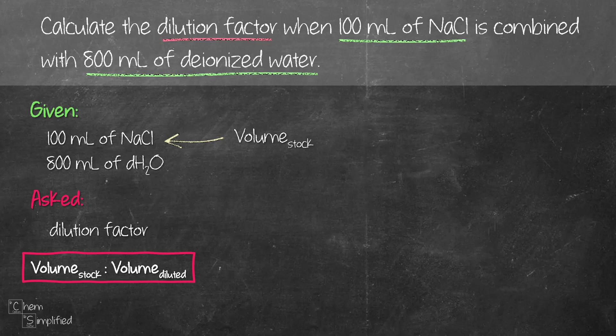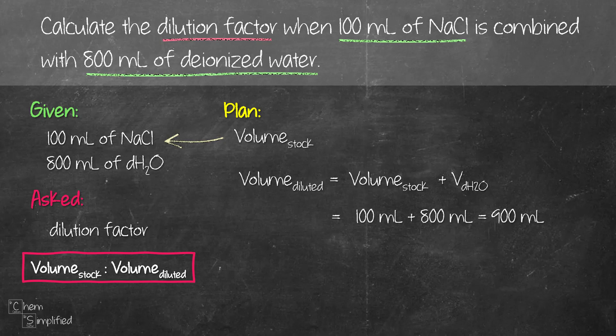So that's how we know 100 mL is the volume of our stock solution. In order for us to find the dilution factor, we'll need the volume of the diluted solution, which is basically the volume of the stock solution plus the deionized water. That's 100 mL plus 800 mL and so that gives us 900 mL.